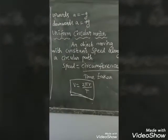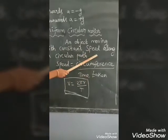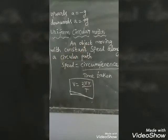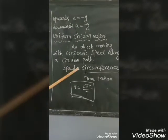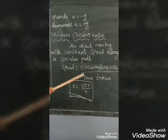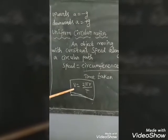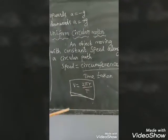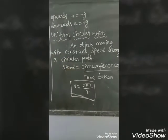Next, uniform circular motion. What is circular motion? An object moving with constant speed along a circular path — that is uniform circular motion. If we want to find the speed, we use the formula: speed = circumference / time taken = 2πR / T. If we know R and T, we can find the velocity of the object.